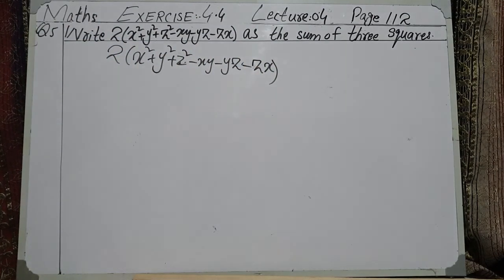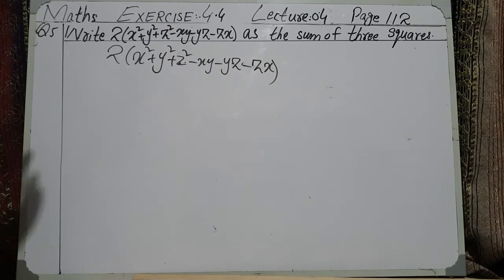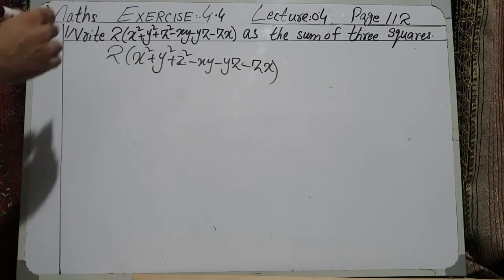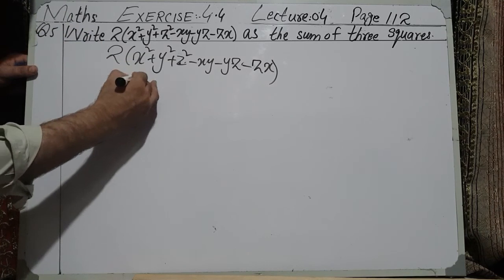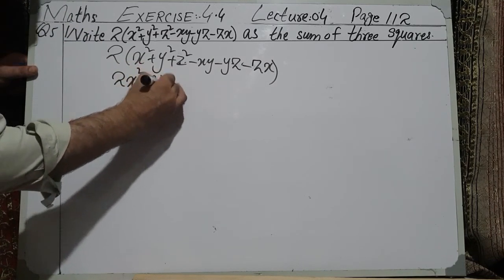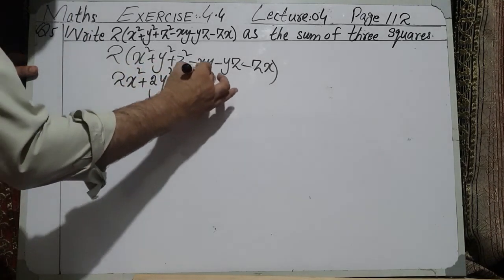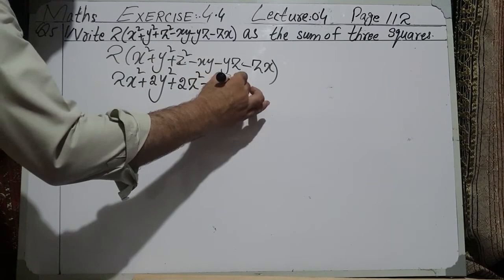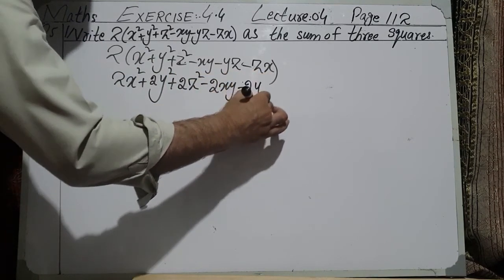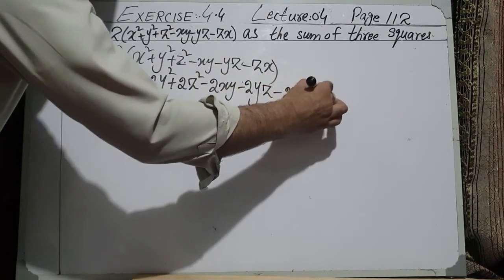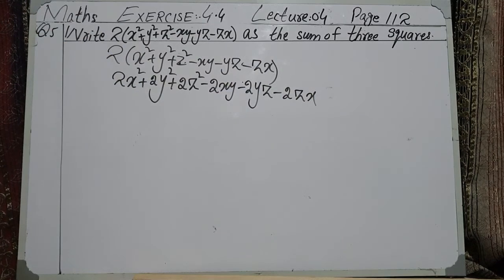We need to convert this expression into the sum of three squares — that is, from its expanded form we need to write it in closed form as three terms, each in the form of a whole square with addition signs between them. For this, first I will multiply 2 inside the bracket: 2x² + 2y² + 2z² - 2xy - 2yz - 2zx.